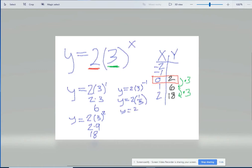So then we have 2 times 1 third, which is 2 over 3. So we're going to take that 2 over 3, and we're going to plug it into our table. So when x is negative 1, y ends up being 2 over 3.